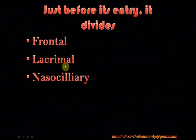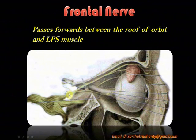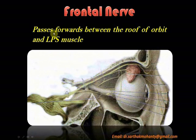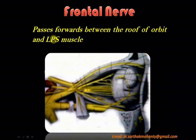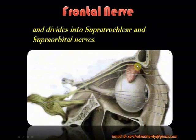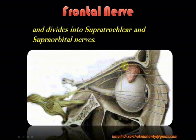Just before entering through the superior orbital fissure, the ophthalmic nerve divides into a frontal branch, lacrimal branch, and nasociliary branch. The frontal nerve is the largest branch; it passes forwards between the roof of the orbit and the levator palpebrae superioris muscle, then divides into a supratrochlear nerve medially and a supraorbital nerve laterally.